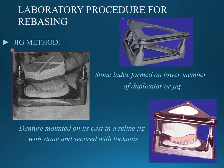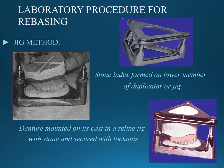Coming to the lab procedure for rebasing — the jig method: a stone index is formed in the lower member by embedding the denture in impression plaster. The cast and denture are placed in a jig (duplicator) and secured by a bolt so it does not move.